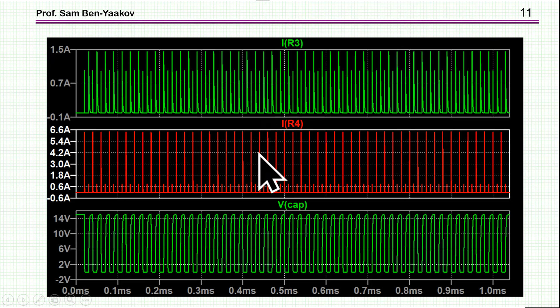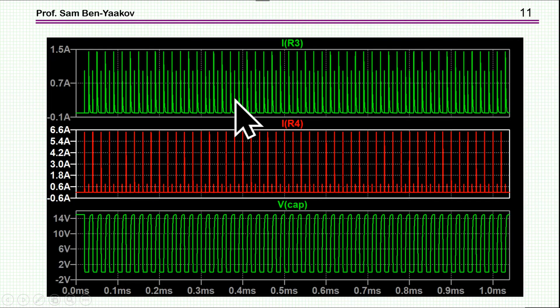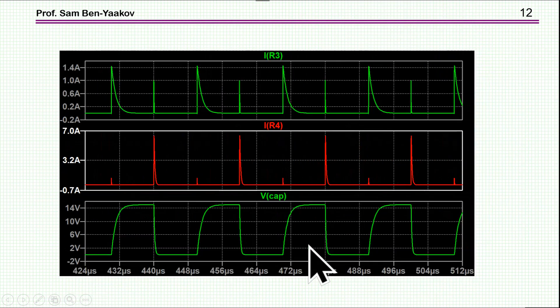And here is what I'm getting. This is the current through the resistors. This is this current, and this current. This is the upper one, this is the lower one, and this is the voltage of the capacitor. Zooming in, I can see this is the regular current. This, this, and this. And this is the parasitic, this is the extra, the penalty that we are getting due to the fact that we are using this configuration.